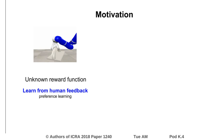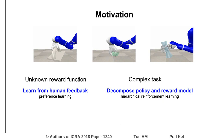To avoid these issues, we instead learn a reward model directly from human preference feedback. For most real-world scenarios, a robot needs to be able to grasp previously unseen objects, but grasping arbitrary objects is a complex task that requires a lot of grasp experience.